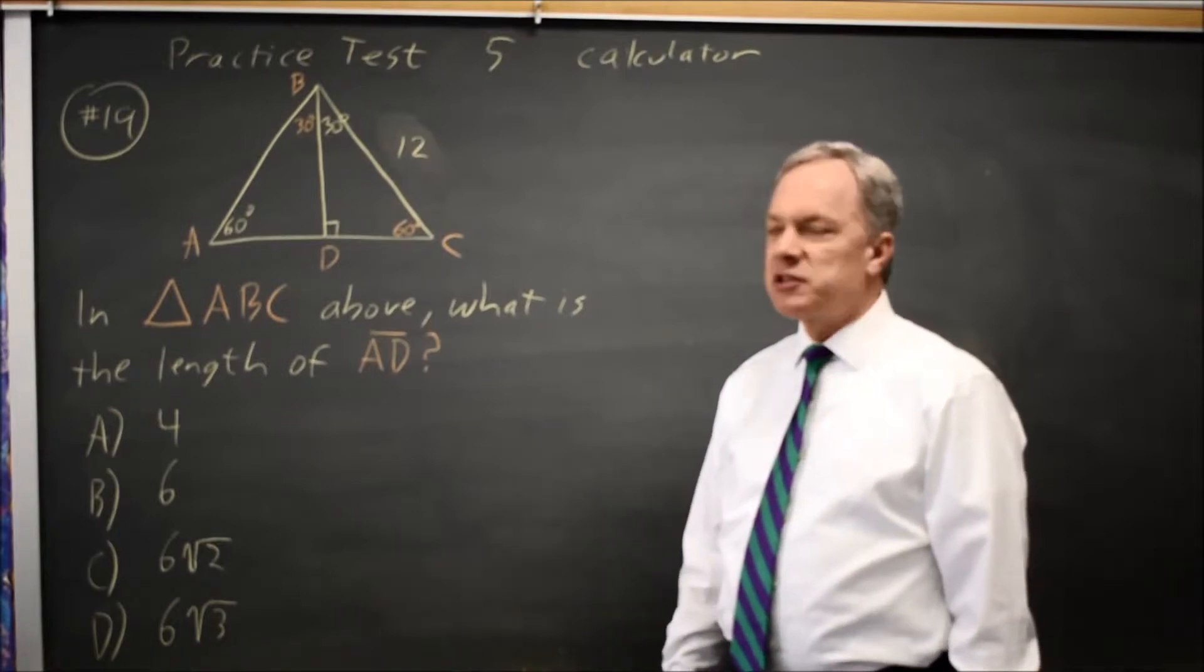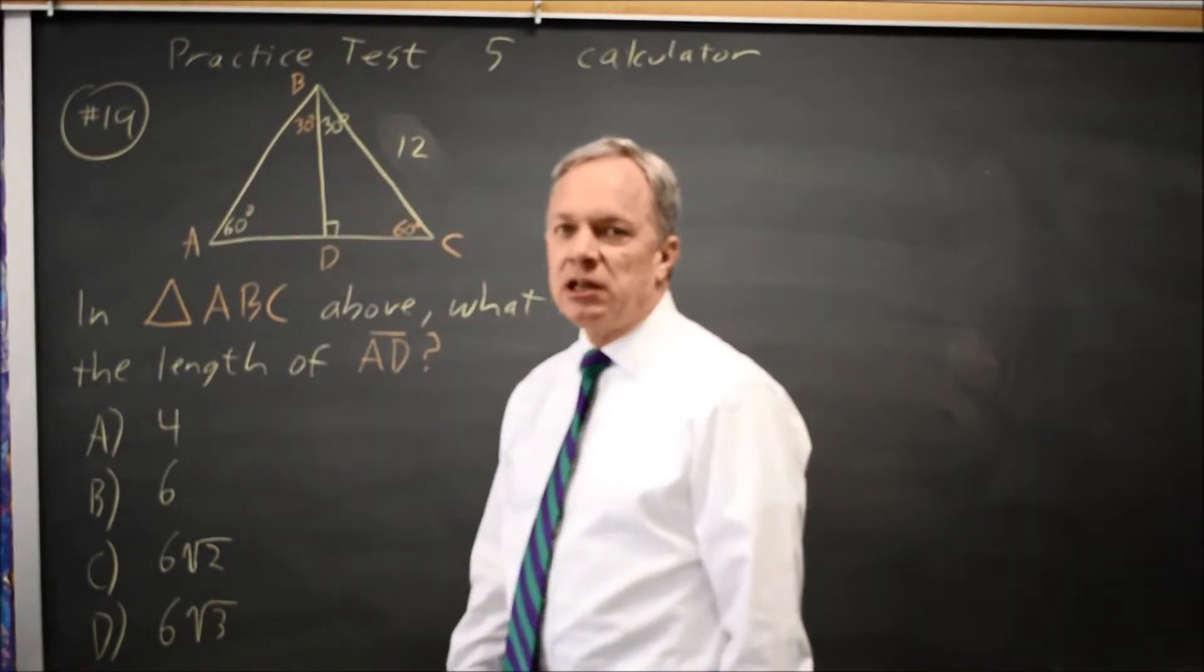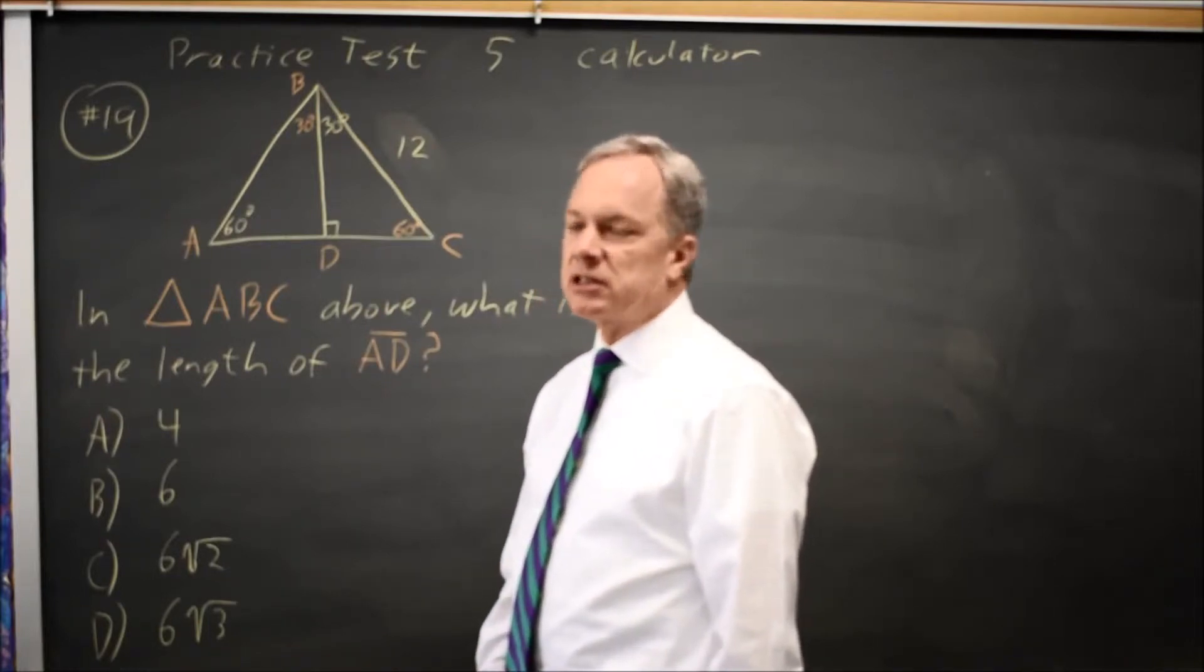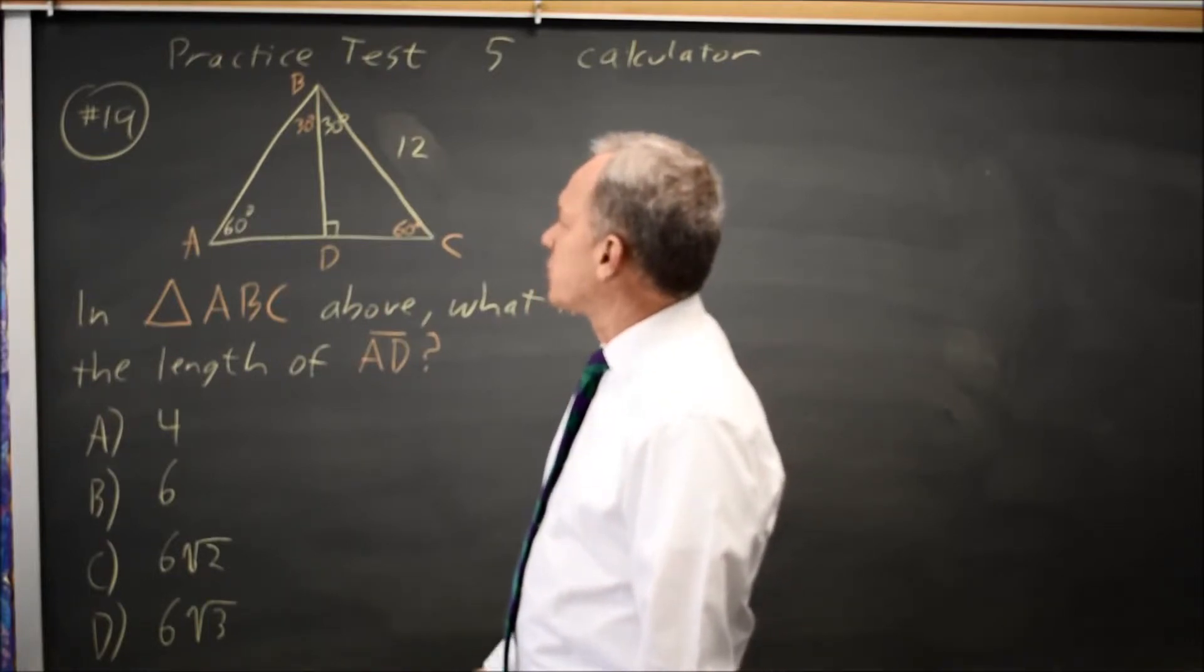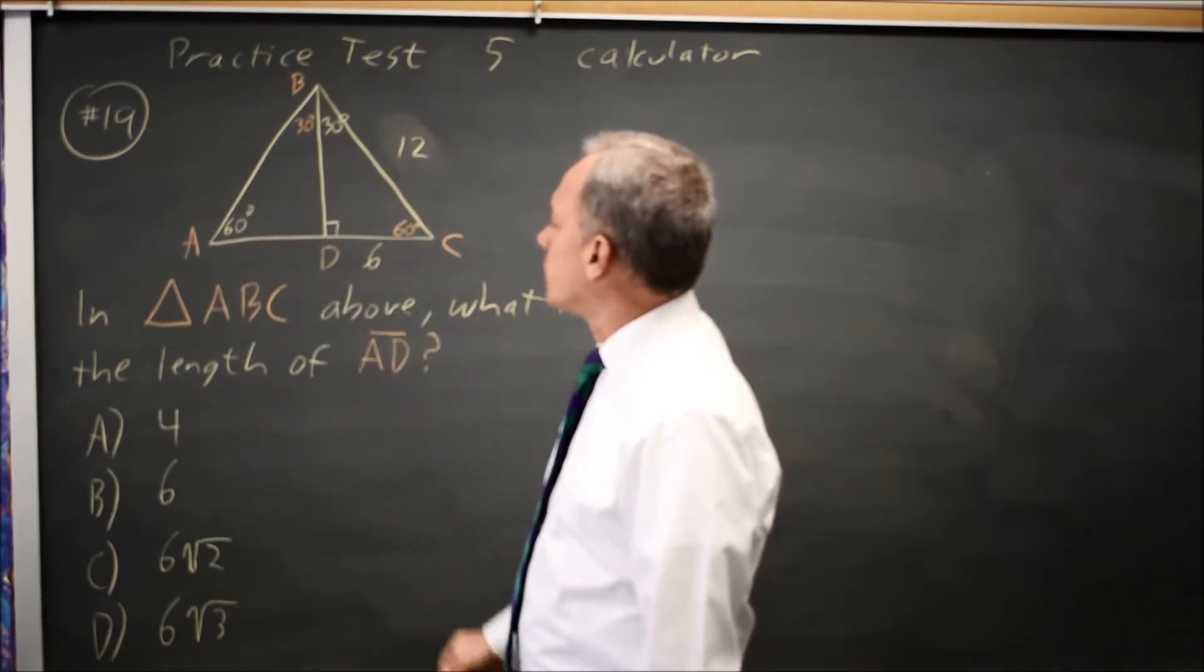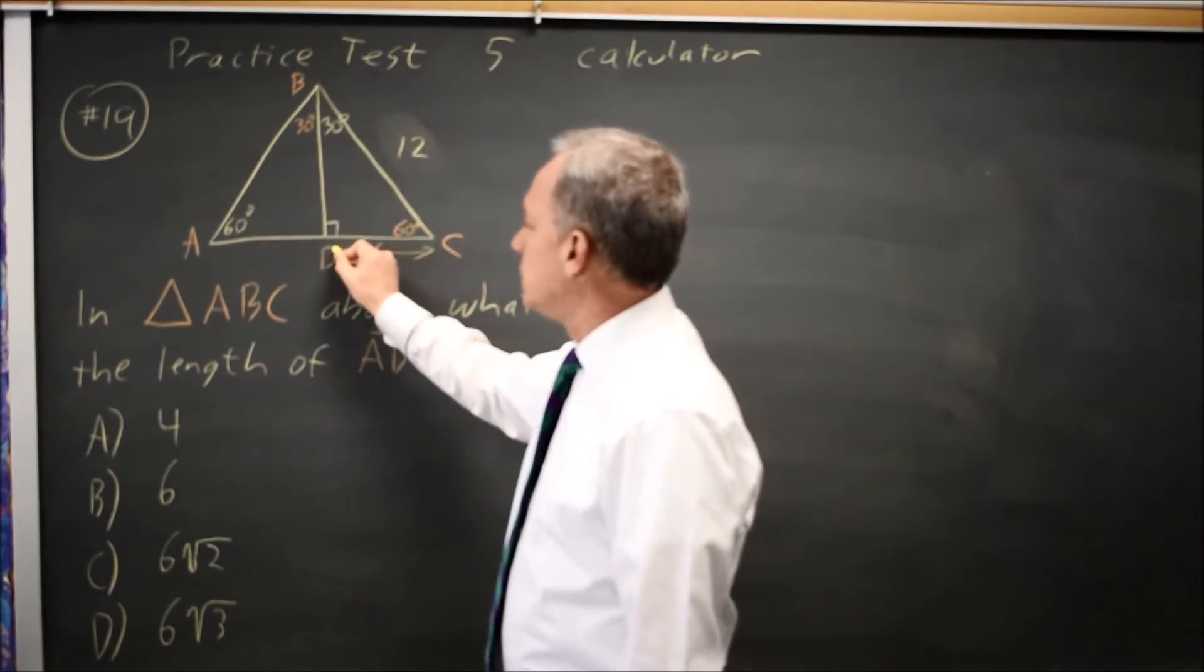We also have a special triangle here, the 30, 60, 90. And College Board in the start of the section gives us the ratios of the sides for a 30, 60, 90 triangle. So you know that this side is 6 from C to D.